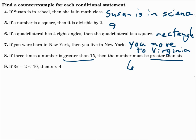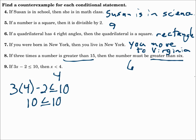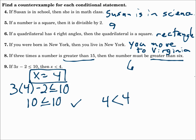Number nine: if 3x minus 2 is less than or equal to 10, then x is less than 4. Notice the hypothesis has 'less than or equal to,' but the conclusion only has 'less than.' So consider x equals 4. Three times 4 minus 2 is 10, and 10 is less than or equal to 10 — the hypothesis is satisfied. Now check the conclusion: is 4 less than 4? No. So x equals 4 is your counterexample — it's true for the hypothesis, but false for the conclusion.